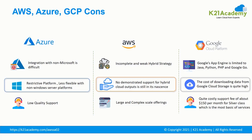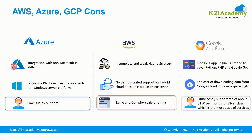In GCP, the cost of downloading data from Google Cloud Storage is quite high. Azure has been noted for low-quality support. AWS has a vast range of products to offer users; however, navigating through them and choosing the best option is quite difficult — organizations may find AWS too complex given the many services that can potentially overlap. GCP provides quite costly support — the cost is about $150 per month for the silver class, which is the most basic service level. GCP needs to improve its cost management across all sections.